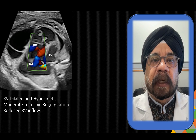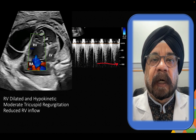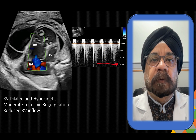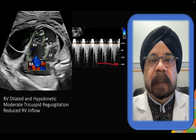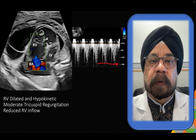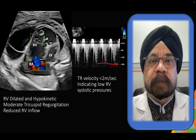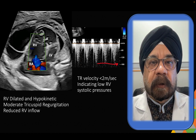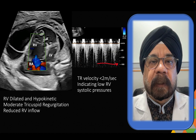In the same case, we measured tricuspid regurgitation velocity, and if you see it, it is hardly two meters per second. That means the RV is unable to generate pressure. This essentially rules out obstruction in the RVOT or ductal restriction — in my previous YouTube case the TR velocity was very high. A low TR velocity tells you the RV is unable to generate adequate pressure, meaning RV pressures are low. This tilts the entire approach towards RV dysfunction rather than anything else.